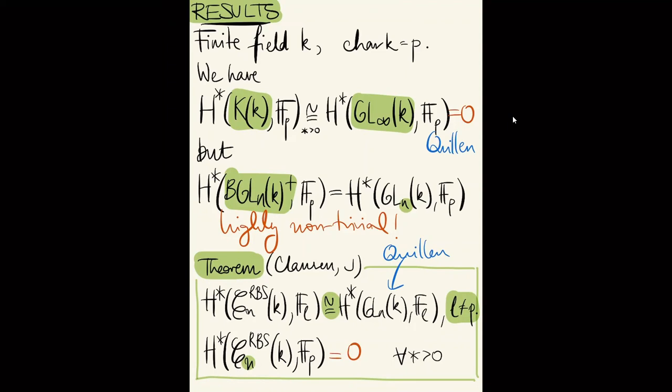For our category, away from the characteristic we get an isomorphism with the homology of the nth general linear group, which is completely determined by Quillen. At the characteristic, however, the F_p homology of C_n^RBS(k) vanishes in all positive degrees. So in this sense we get as close to the K-theory space as possible — our model is better than the plus construction for finite fields, because we don't have this unstable noise in F_p homology. For local rings with infinite residue field we recover the plus construction; for finite fields we get something better. This is how far we've gone. Thank you.